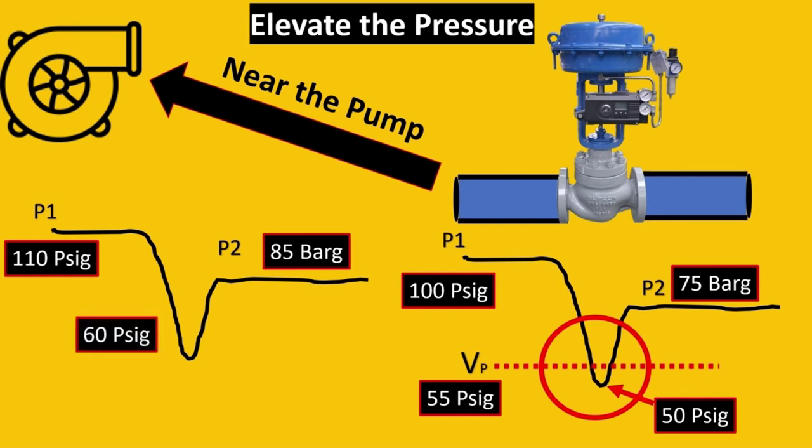My P1 is now 110 psig. I have the same drop of 50 psig, so I get 60 psig here because 110 minus 50 is 60. The amazing thing is, look at the vapor pressure curve - it was 55 psig, so it's going above, and we've saved cavitation without adding anything, just moving the control valve. Isn't it amazing?